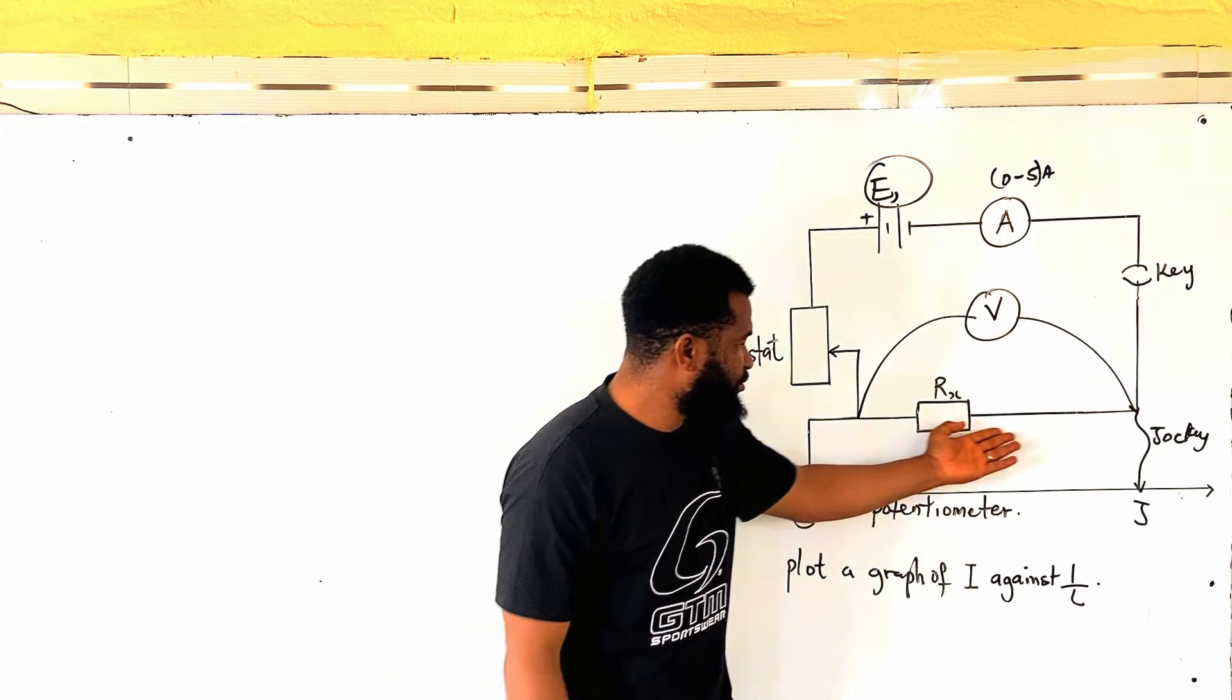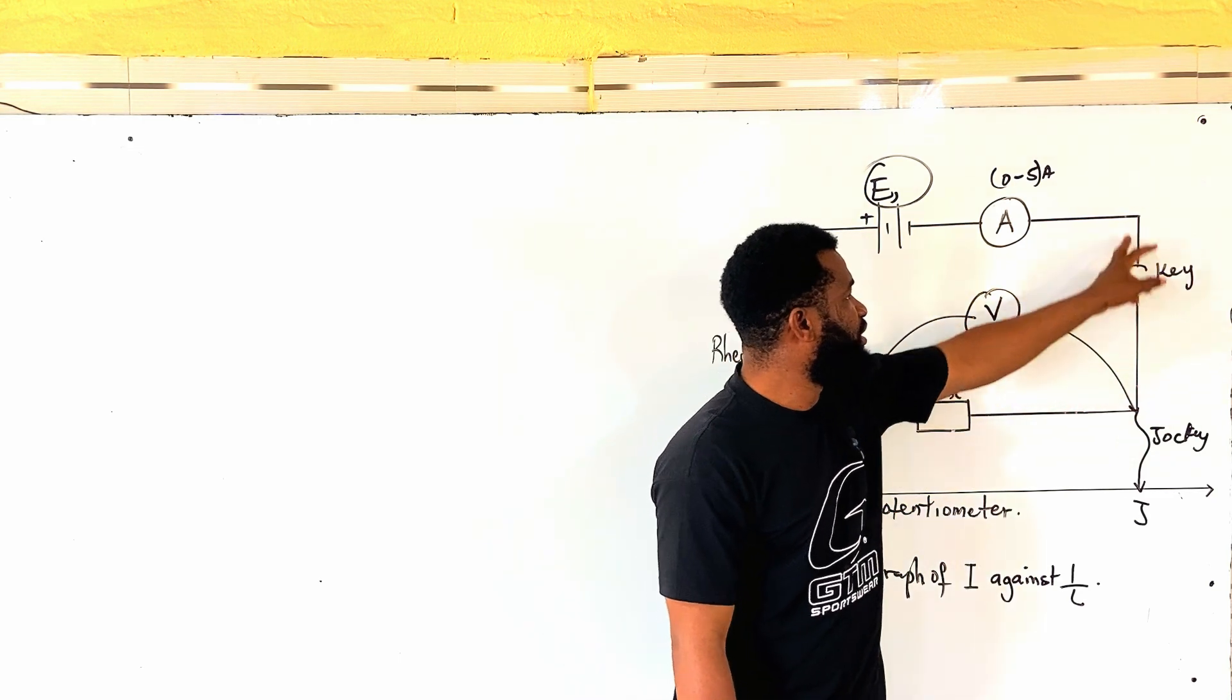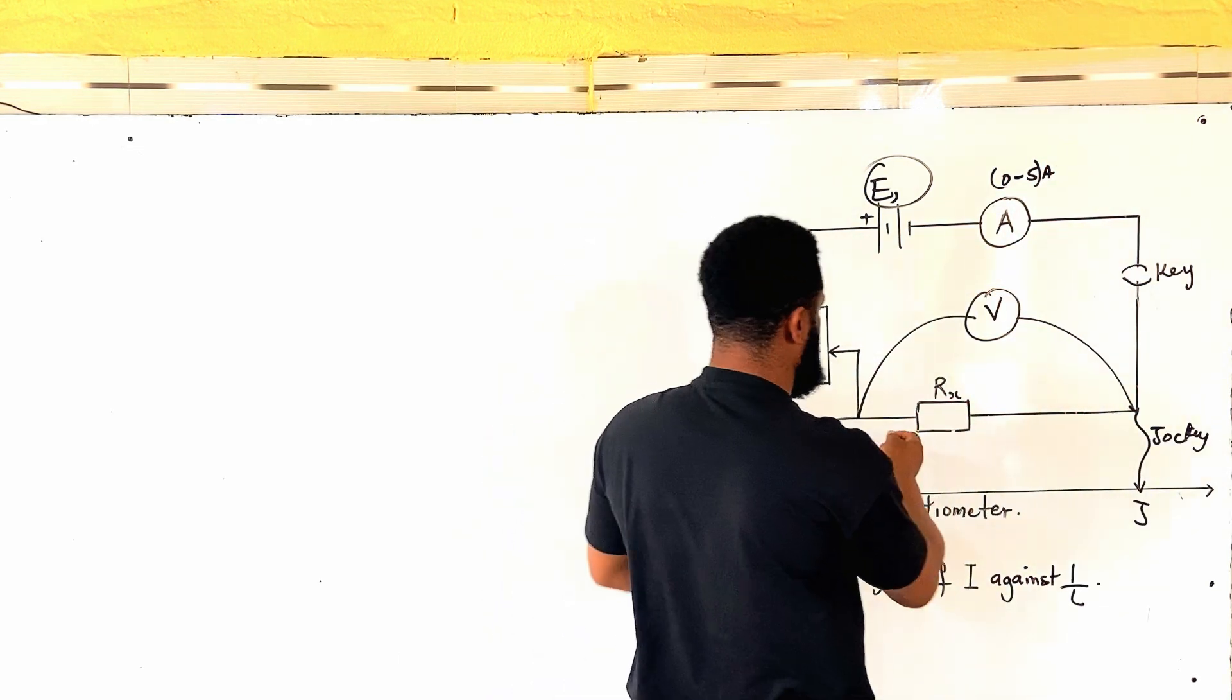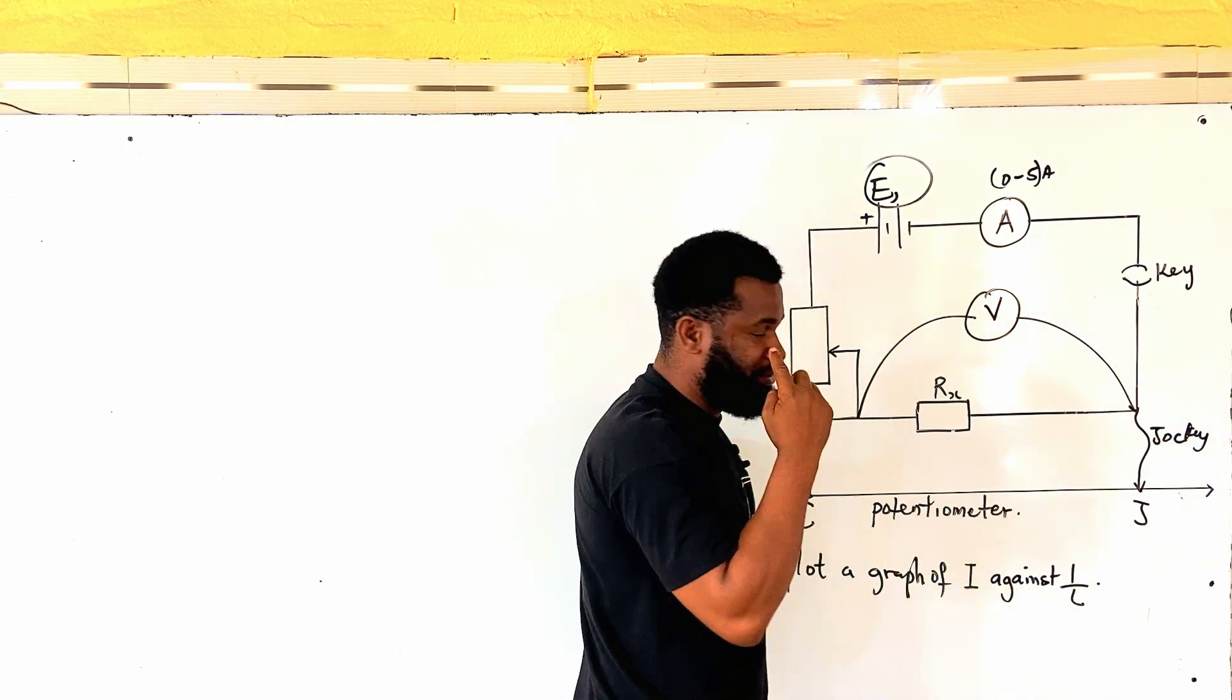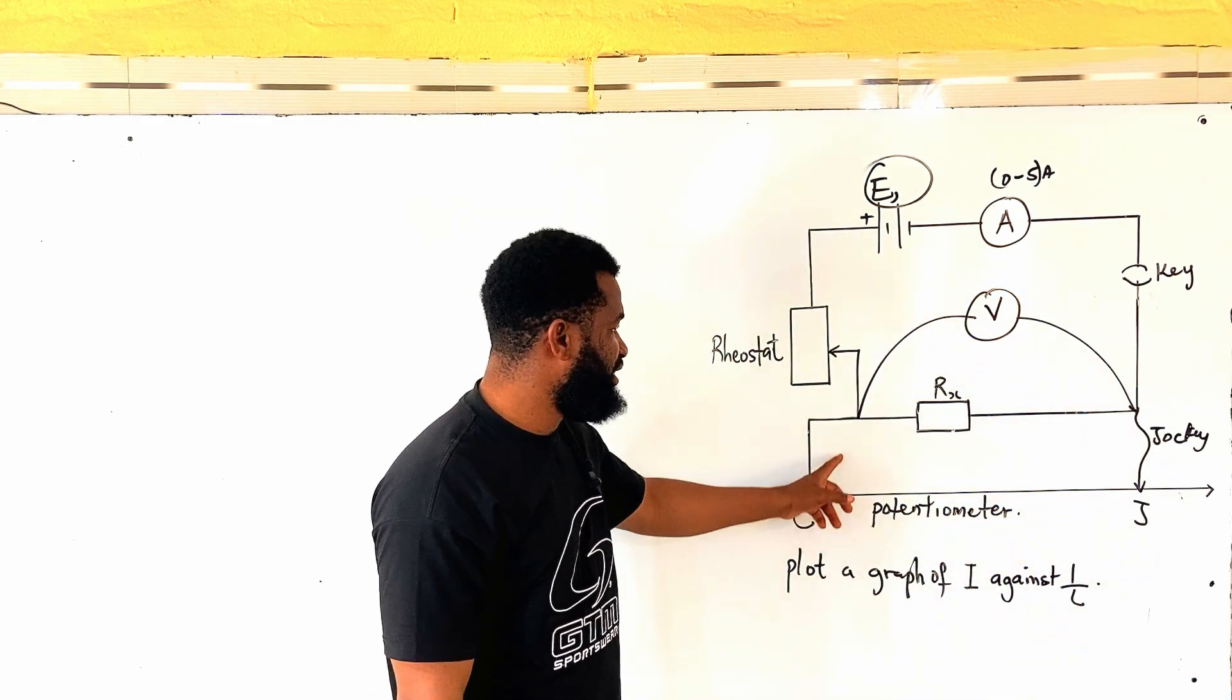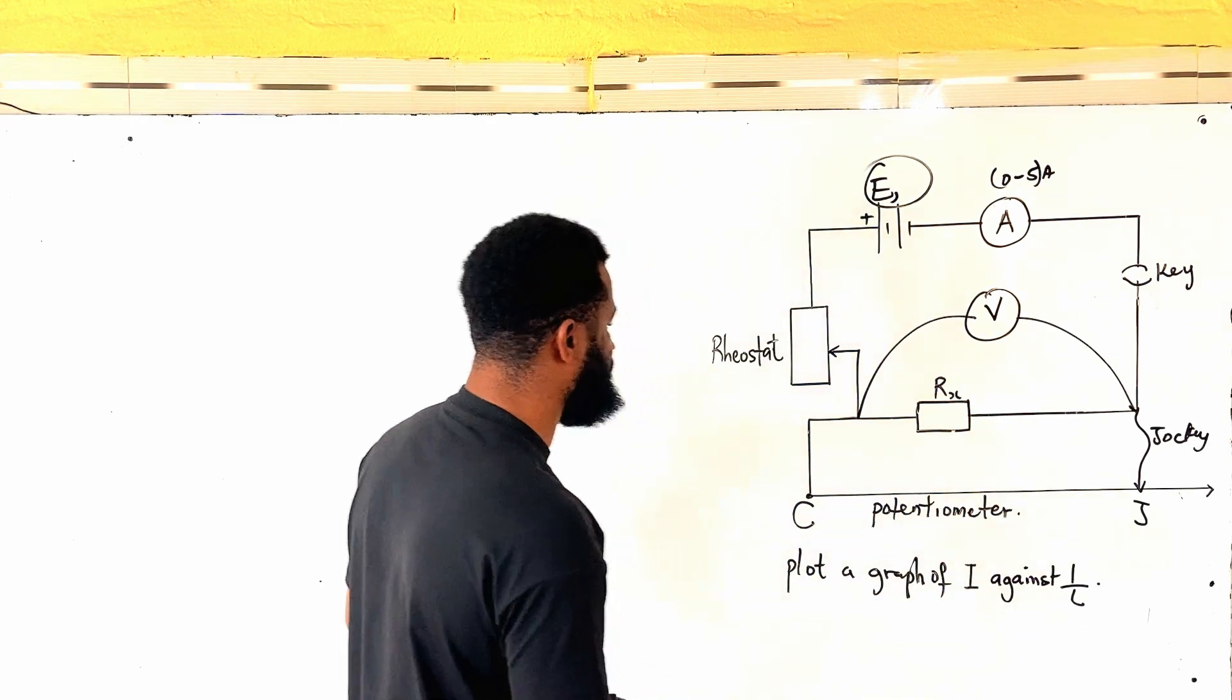So when you get to the resistor, you just connect all of them: battery, rheostat, resistor, key, ammeter first. Then after that, connect a voltmeter, one side of the resistor, and the other side or terminal of the resistor, connect a voltmeter, also connect a potentiometer the same way across the other's end. So if this is done, what we are going to have is this.